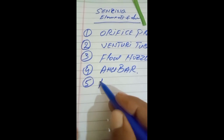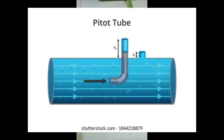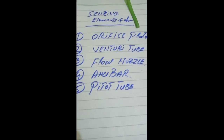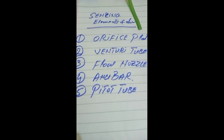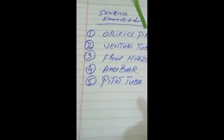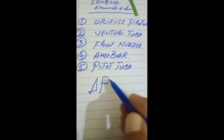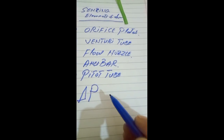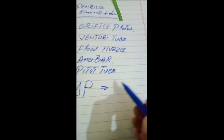Number five is the pitot tube. A pitot tube measures fluid flow velocity. These are our five flow sensing elements. All five elements create the delta P — that is their working principle. They are creating the delta P in the flow line, in the flow duct, and the annubar is also creating the delta P.